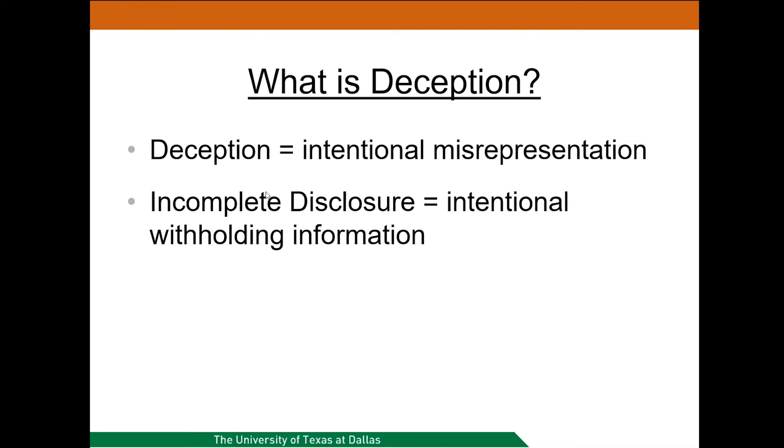Another element of deception is incomplete disclosure, and this is when investigators intentionally withhold information about the true purpose or the nature of the study. So instead of providing false information, they are just not disclosing all of the details. An example of incomplete disclosure: participants are asked to take a quiz for research but they are not told the research question involves how background noise affects their ability to concentrate.